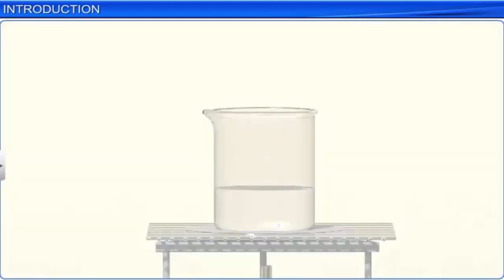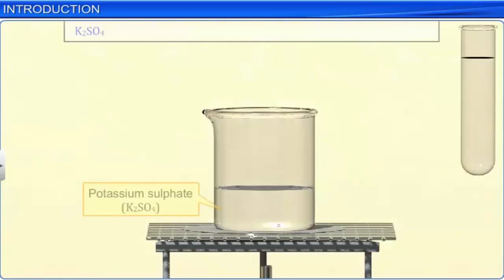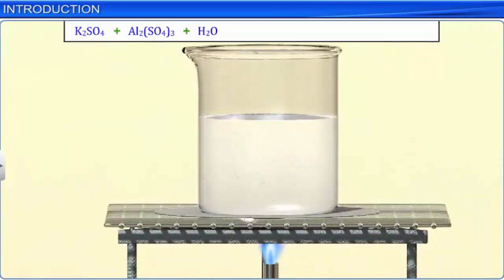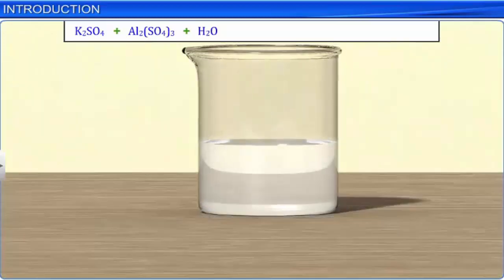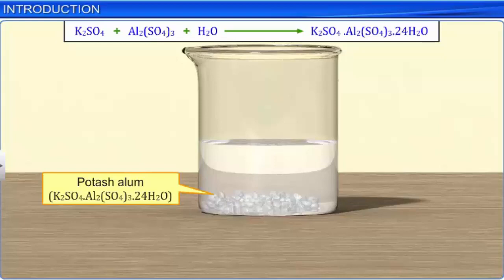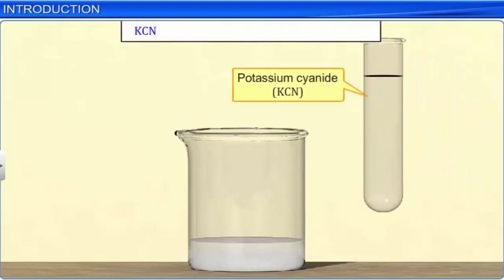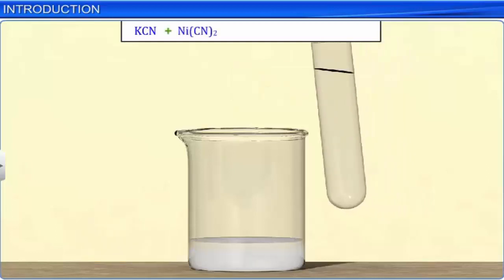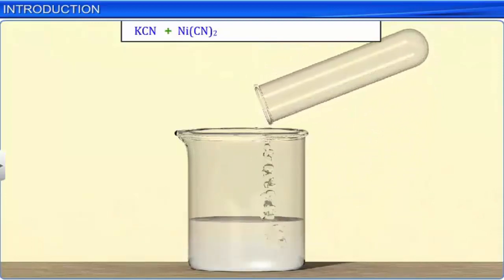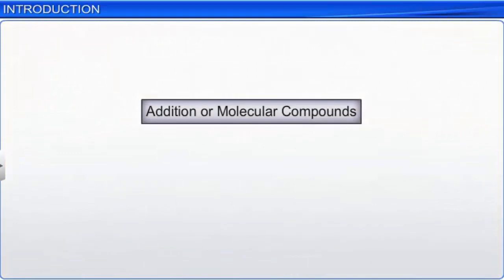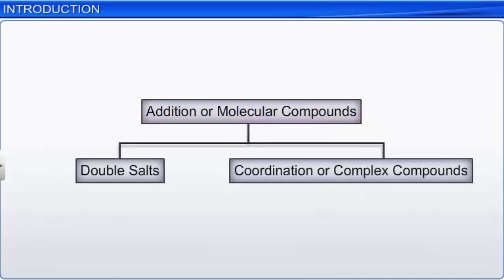For example, when saturated solutions of potassium sulfate and aluminum sulfate are mixed and heated till the crystallization point is reached, we get the well-known compound, potash alum. Similarly, if we add a solution of potassium cyanide to a white precipitate of nickel cyanide, the precipitate immediately dissolves and a red-orange solution of a new compound is obtained. On the basis of their nature, addition or molecular compounds are divided into two categories: double salts and coordination or complex compounds.